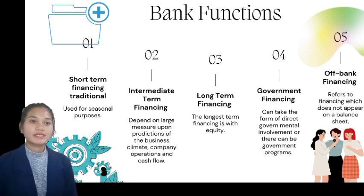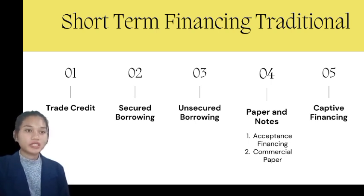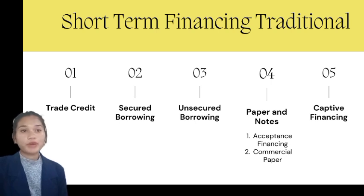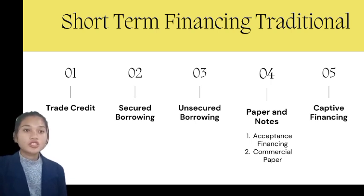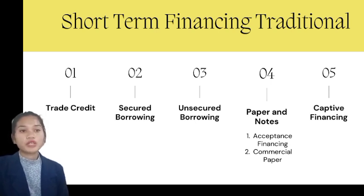Off-bank financing refers to financing which does not appear on a balance sheet. The classifications of short-term financing include: first, trade credit — a normal credit form extended to a firm by the supplier; second, secured borrowing — a secured loan is one that is secured by assets such as accounts receivable, inventories, machinery, equipment, cars, constructions, buildings, and some sort of contract. These loans are offered by financial intermediaries including commercial financing firms, banks, and retail lenders.